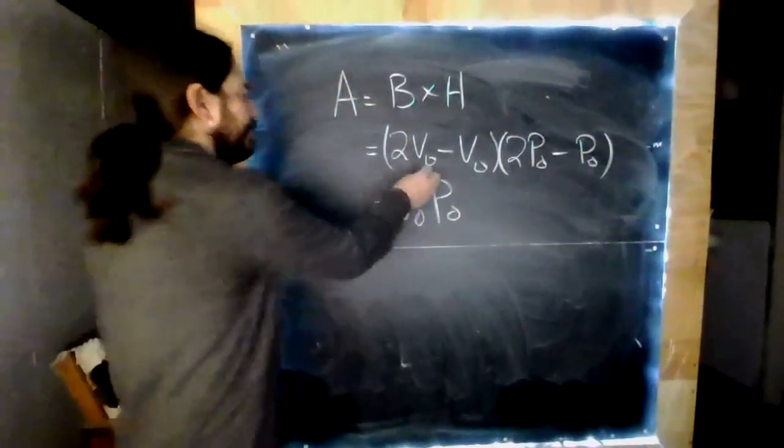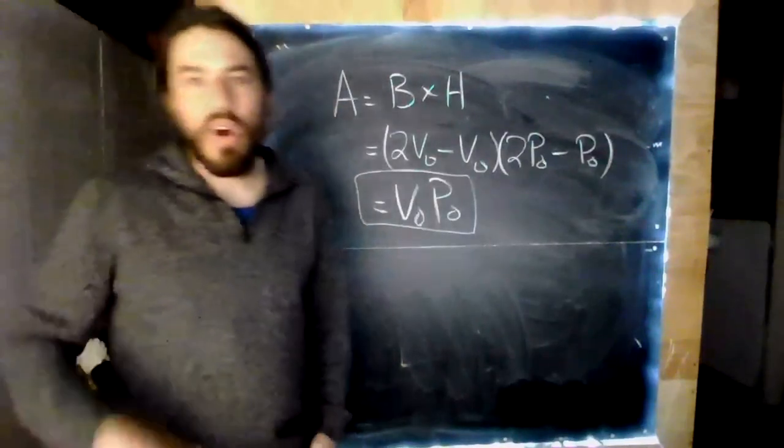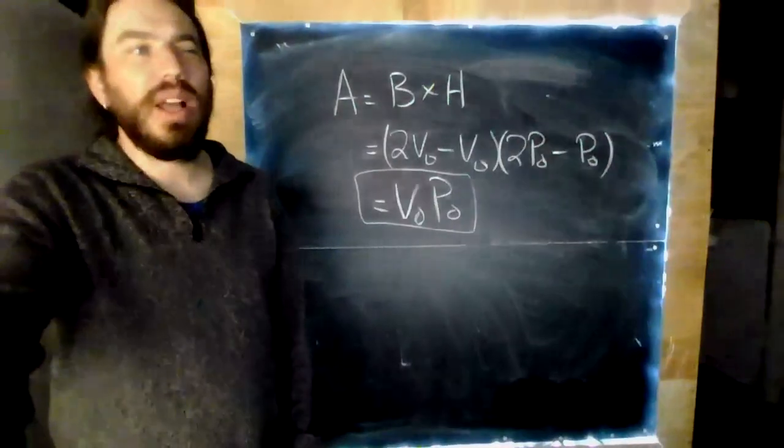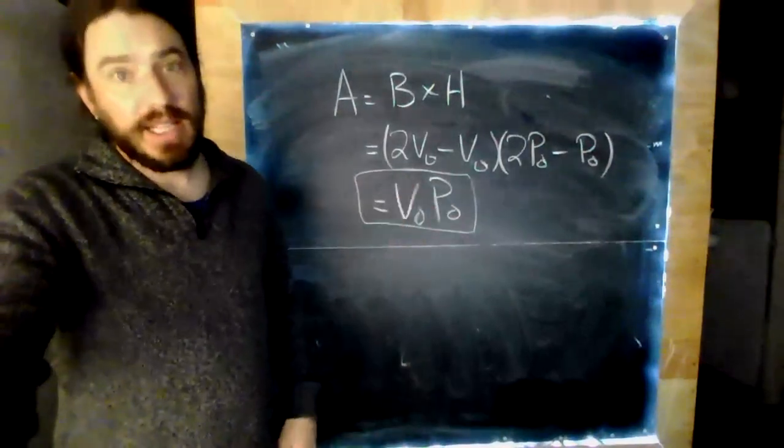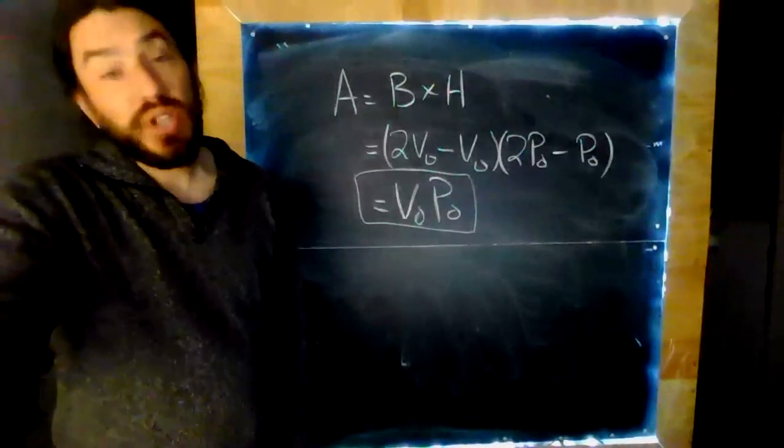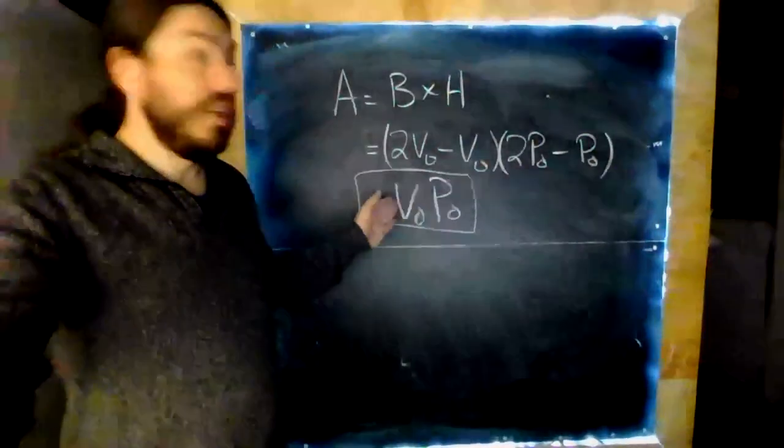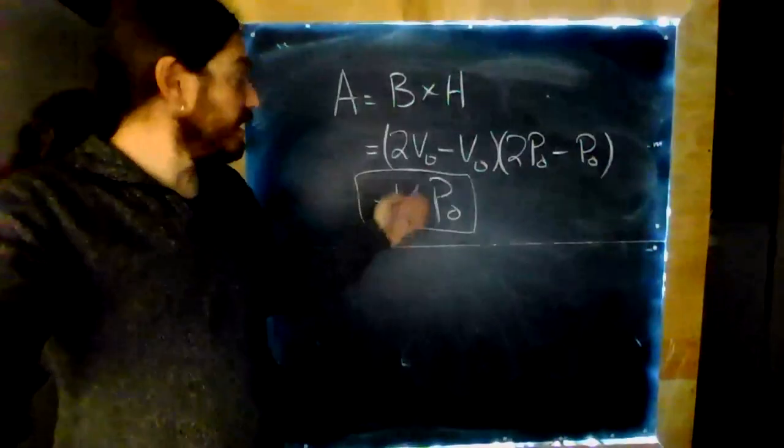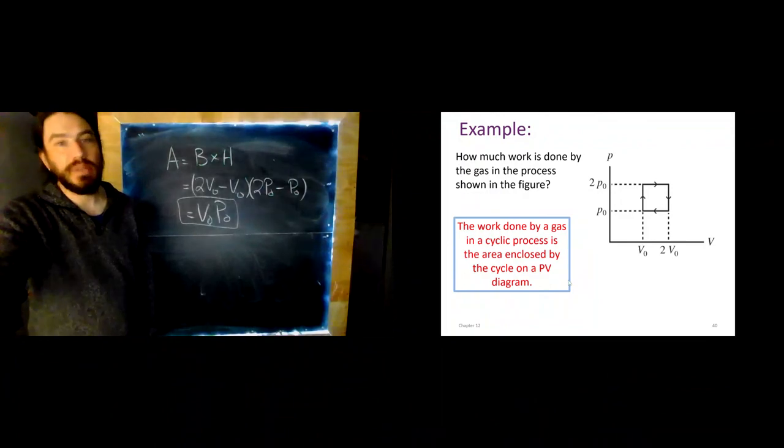Well, our base is just 2V_0 minus V_0. And our height is just 2P_0 minus P_0 or V_0 times P_0. Now, in a homework problem or a quiz question, I'd probably give you numbers here. And so, you need to run your calculator. But, that's the idea. Be sure you check your units. If we're going to expect to get joules out, then we need to put our volume in meters cubed. And we need to put our pressure in Pascals. And again, be sure to use the absolute pressure.